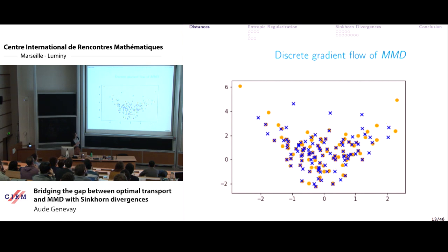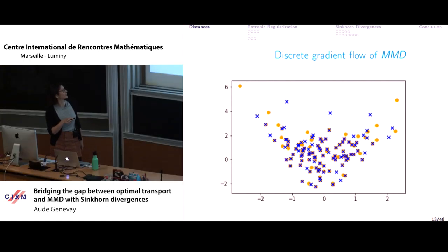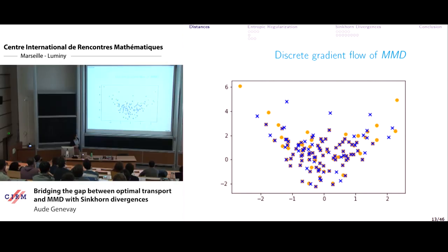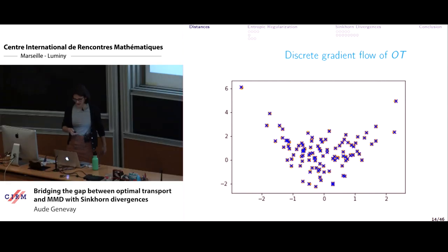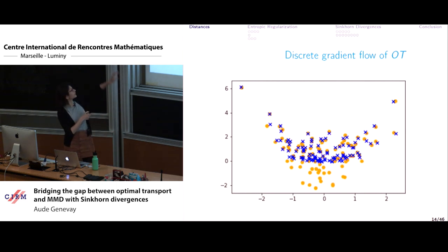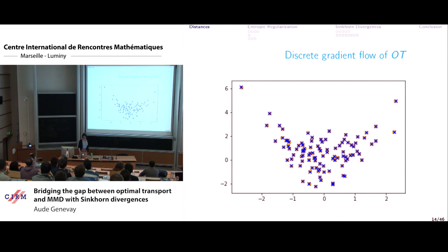Here's what happens with MMD: the points that are less represented in the point cloud — those further from the mean — are not recovered by gradient descent. They lag behind and float in areas I don't want them. With optimal transport, points are matched very quickly to their target positions, following a straight line between their initial position and the point they're matched to — exactly what happens during gradient descent with OT.